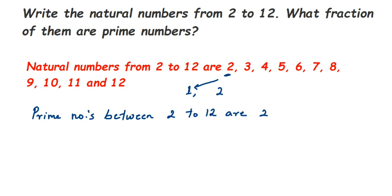Three is a prime number because it goes only in the 1 table and the 3 table. Four is not a prime number because it goes in 1, 2, and 4 — more than two tables. Five is a prime number, it goes only in the 1 and 5 table. Six is not a prime number because it goes in 1, 2, 3, and 6.